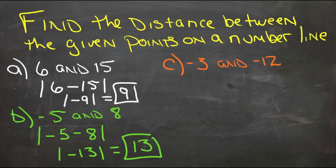So again, it's 13 steps from negative 5 across to 8 on the number line.